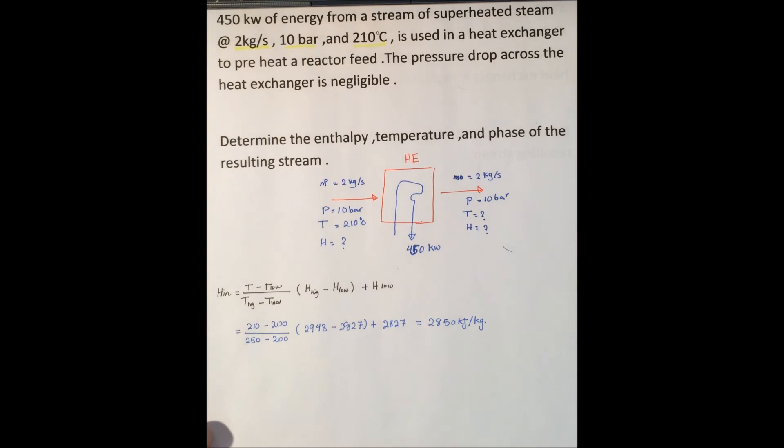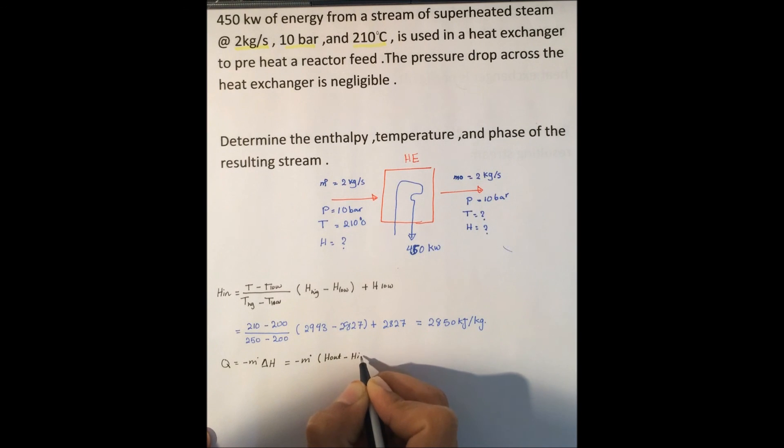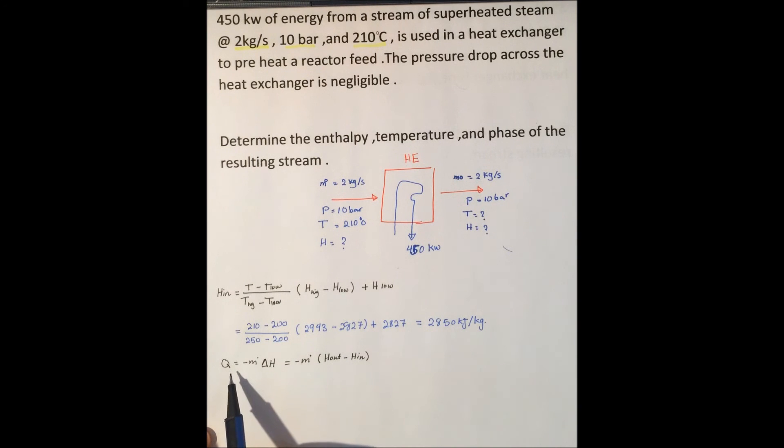Now we can do an energy balance on the steam stream. Q equals minus m dot delta H. We can simplify this to minus m dot times (H_out minus H_in). From this equation we know Q, which is 450, and also we know the mass flow rate.